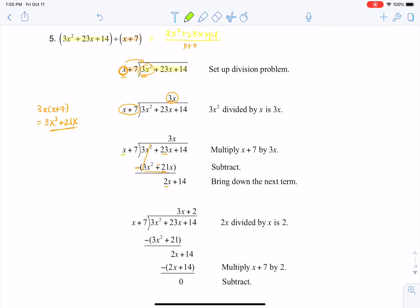We look at what I need to multiply x by to get to 2x now. If I want to get from x to 2x, I need to multiply by 2. Then I take this number and multiply it against my divisor. I'm going to make sure I FOIL, so 2 times x plus 7 is 2x plus 14.